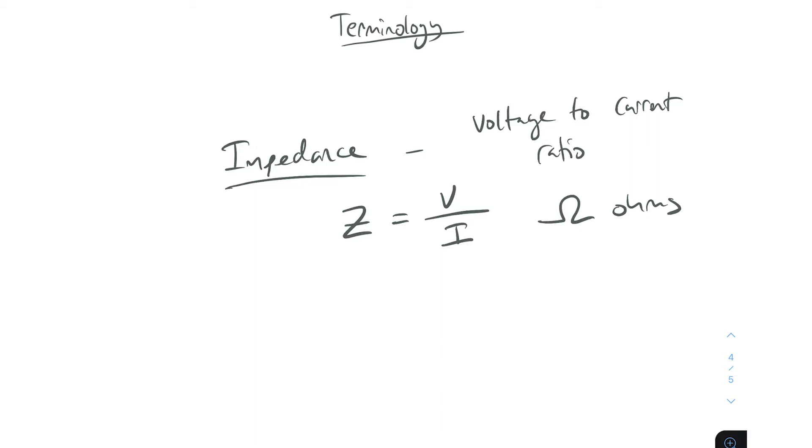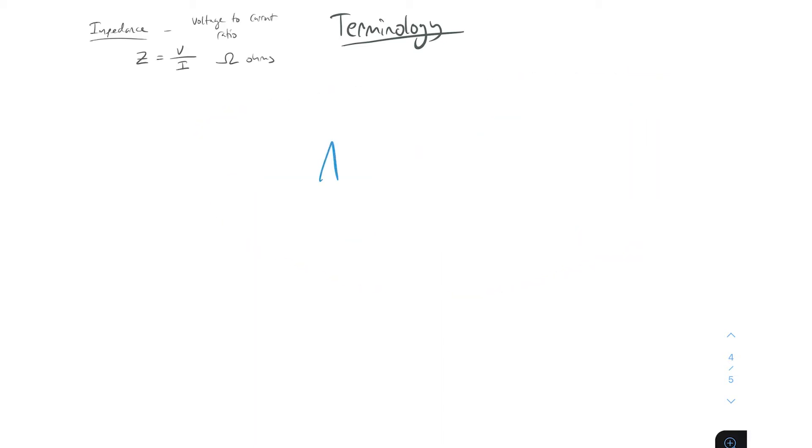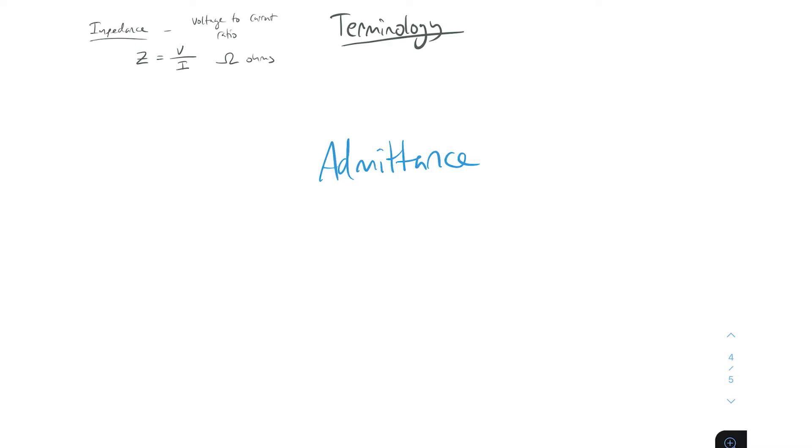I'm going to blow your mind with this one - admittance. You may not have heard of this by now, that's okay. Admittance is the reciprocal of impedance. We denote admittance with Y since impedance is Z, so admittance is Y.